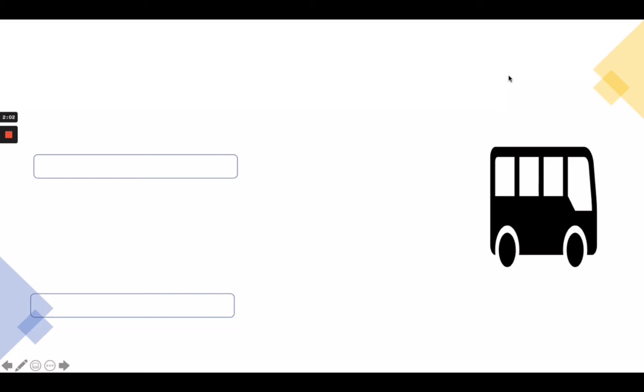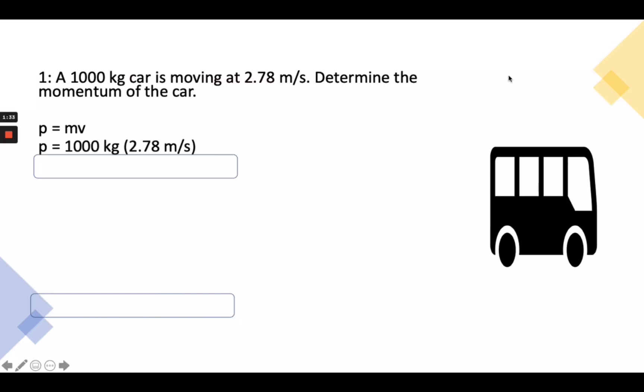Now, let us solve a problem that involves momentum. A 1,000 kilogram car is moving at 2.78 meters per second. Determine the momentum of the car. As mentioned earlier, momentum equals mass times velocity. Our mass is 1000 kilograms and our velocity is 2.78 meters per second. We simply multiply, and the answer is 2,780 kilogram meters per second. This is the momentum of the car.